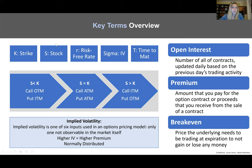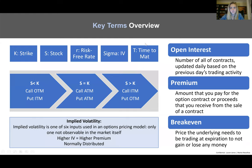For terminology you'll see later: anytime you see K or X, that is indicative of the strike price. S is the price of the underlying security — sometimes denoted as S sub T. The risk-free rate R is used for discounting, oftentimes either the 10-year or 30-year treasury. Sigma is representative of implied volatility — note that this is not variance, it's sigma, like standard deviation, not standard deviation squared. T is the time to maturity, oftentimes quoted as a fraction of trading days, and there are 252 trading days in a year.